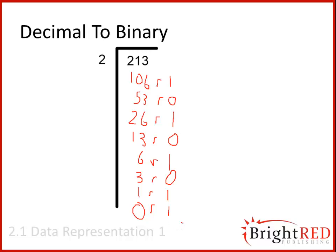What we do now is that we read from here up to here. So then the value that we have is 11010101. And this is our value for 213.